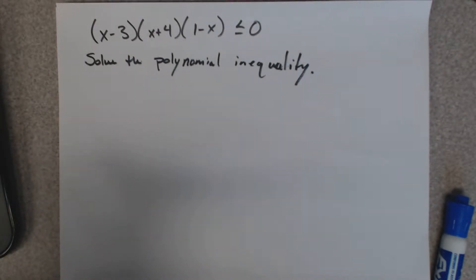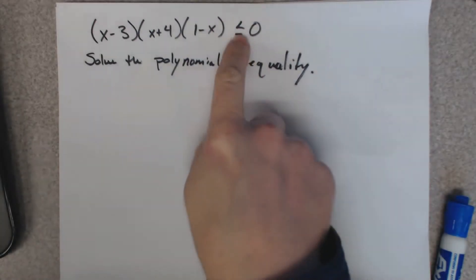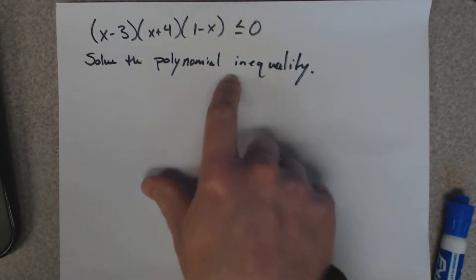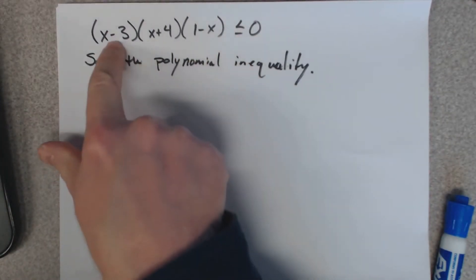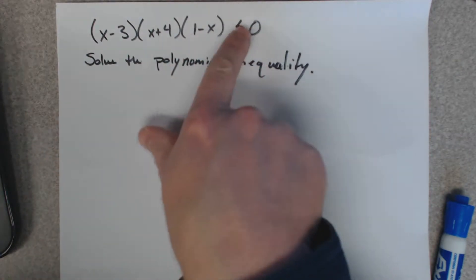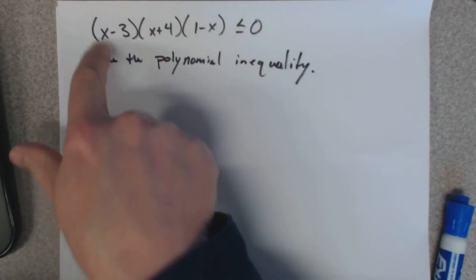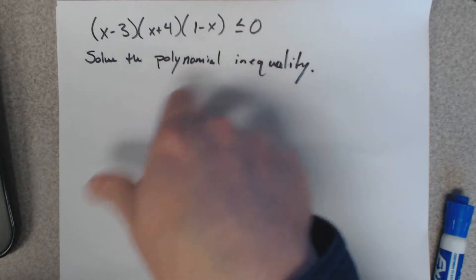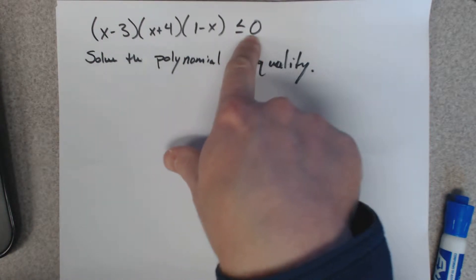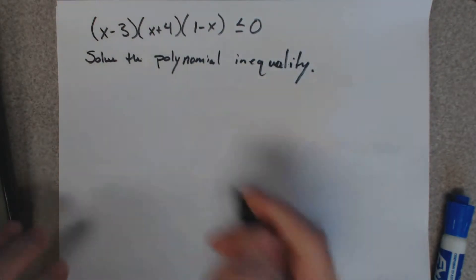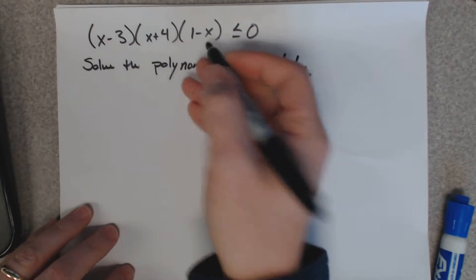Here is a polynomial inequality. Previously you've dealt with these where there's an equal sign, and you just have to find what values of X you plug in to get zero. But now you're worried about what values of X make this whole expression less than or equal to zero. We can find the 'equal to zero' part pretty easily — if it's in factored form, you just set each factor equal to zero.